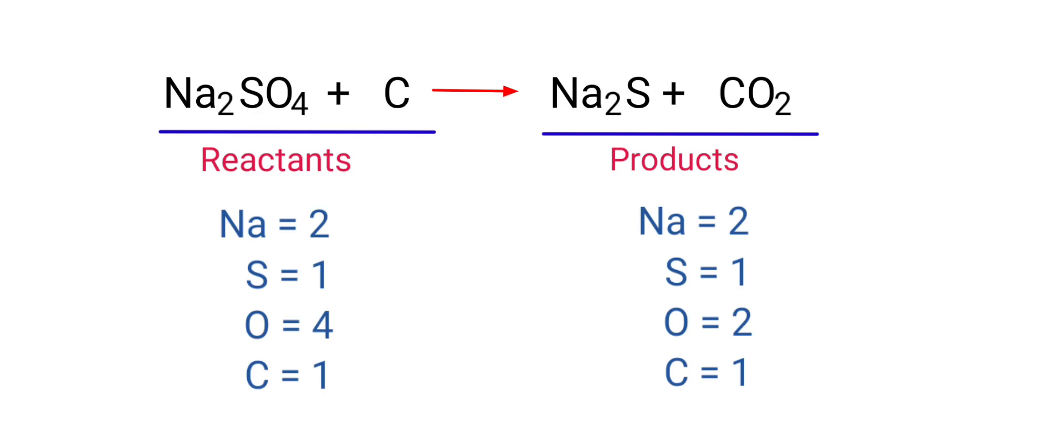The number of atoms are not balanced on both sides. To balance the chemical equation, we need to make use of coefficients. A coefficient is a number that we place in front of a chemical formula.